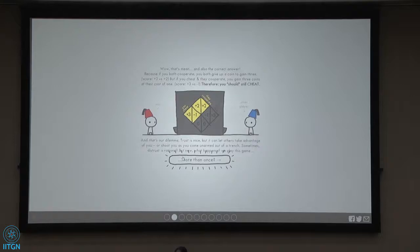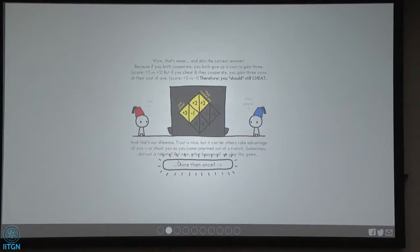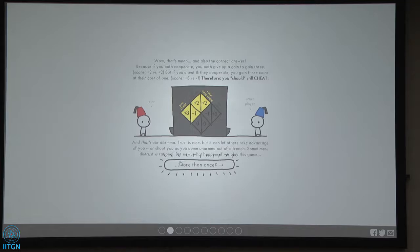Why is that? Because when the other person cooperates, if you cheat, you get three coins without losing anything. So your payoff here is three. On the other hand, given that the other person is cooperating, if you cooperate as well, then you lose a coin and you stand to gain three. So your net profit is only two. So you're better off cheating. Is that clear? So everyone who answered that, not because of guesswork, but because you managed to work through it, kudos to you. That's pretty smart.